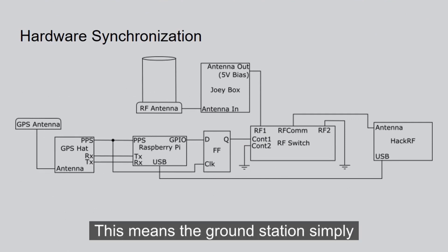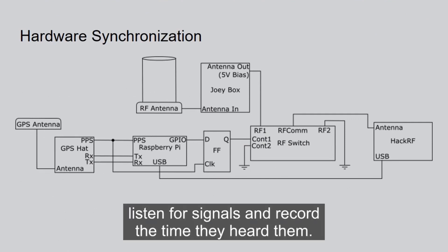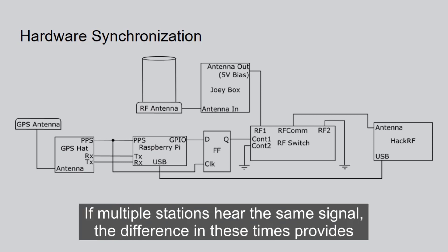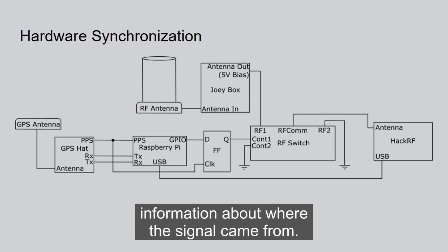LASSO uses time difference of arrival tracking. This means the ground stations simply listen for signals and record the time they heard them. If multiple stations hear the same signal, the difference in these times provides information about where the signal came from.